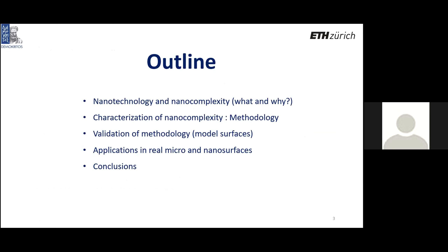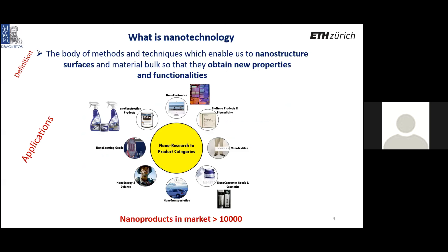The talk outline covers: what is nanotechnology and nanocomplexity and why we need to characterize it; the proposed methodology; validation in model surfaces; and applications in experimental surfaces. Nanotechnology can be described as the body of methods and techniques enabling us to nanostructure surfaces and material bulk so that they obtain new properties and functionalities. The range of applications is very widespread — from nanoelectronics to transportation, cosmetics, and textiles — with more than 10,000 nanoproducts now on the market.